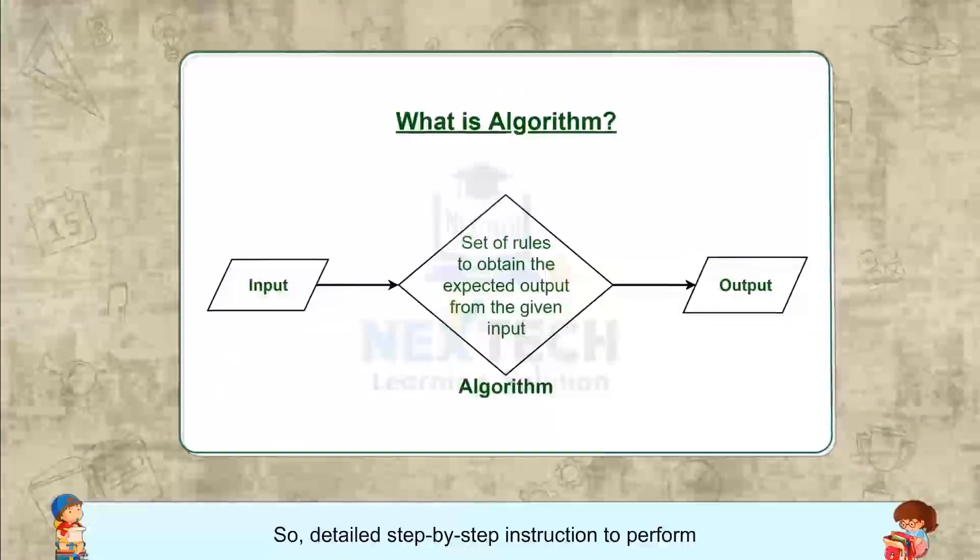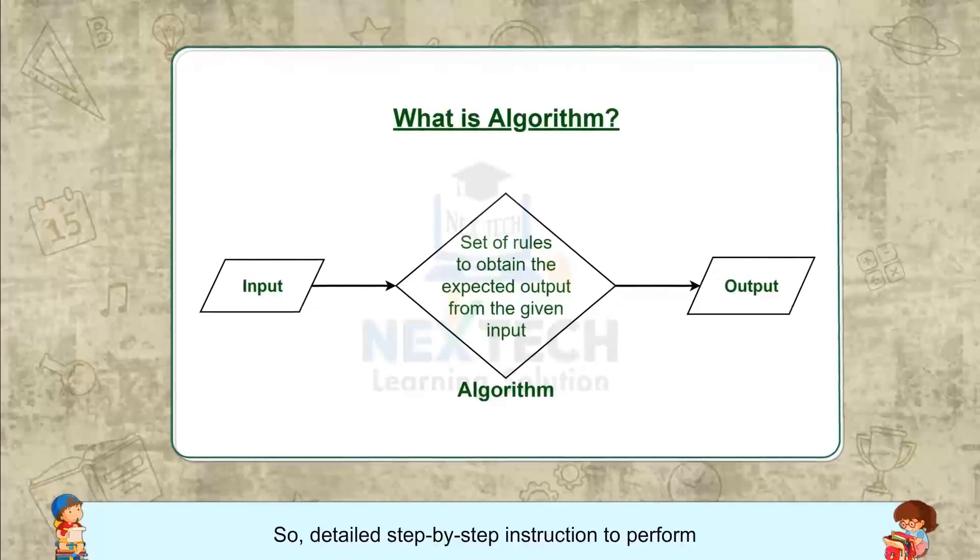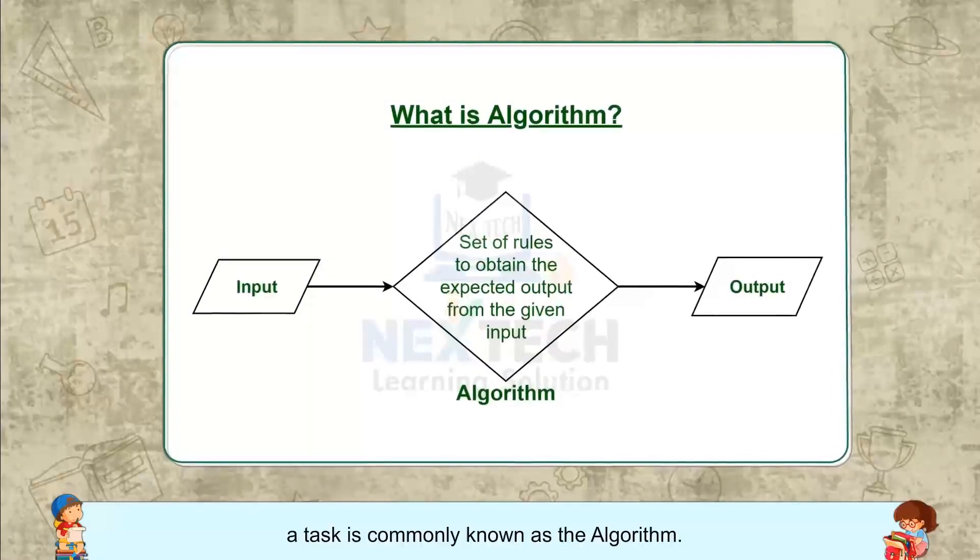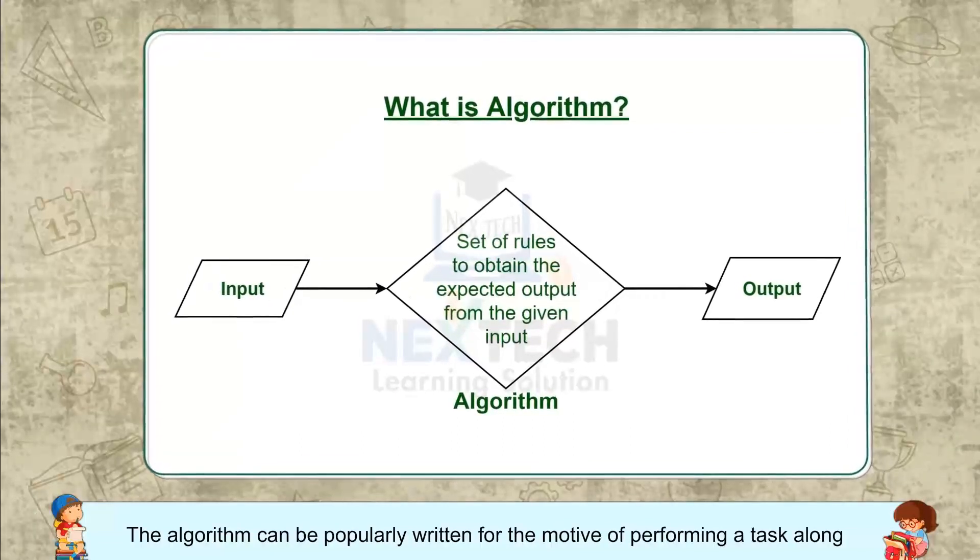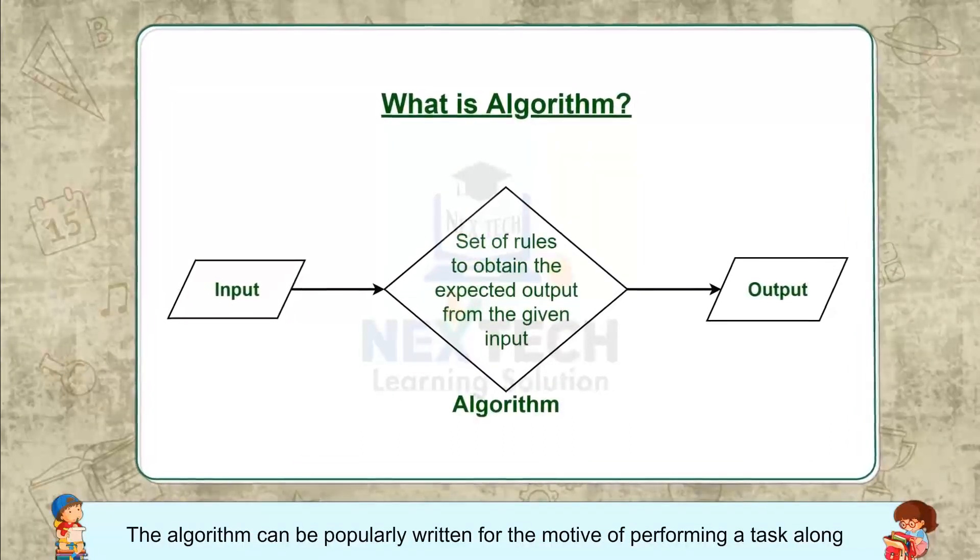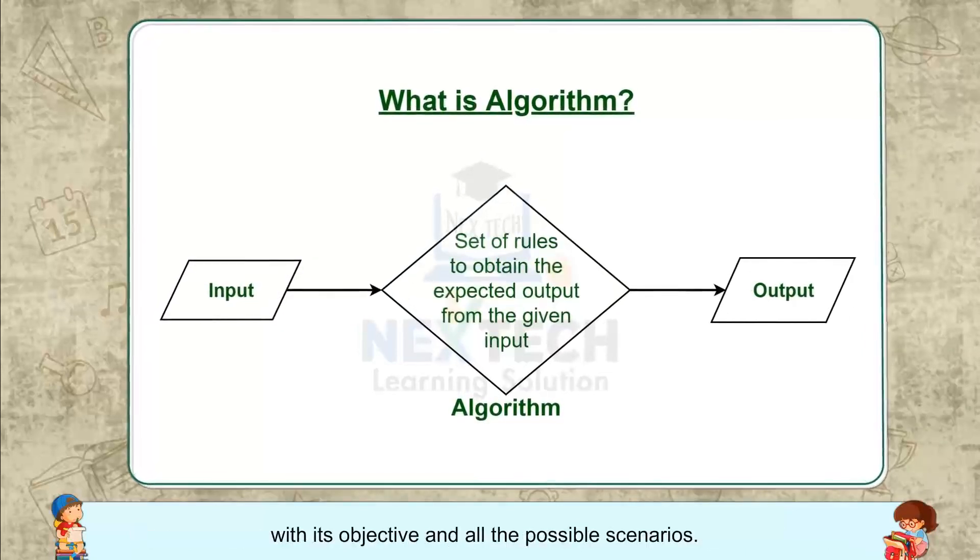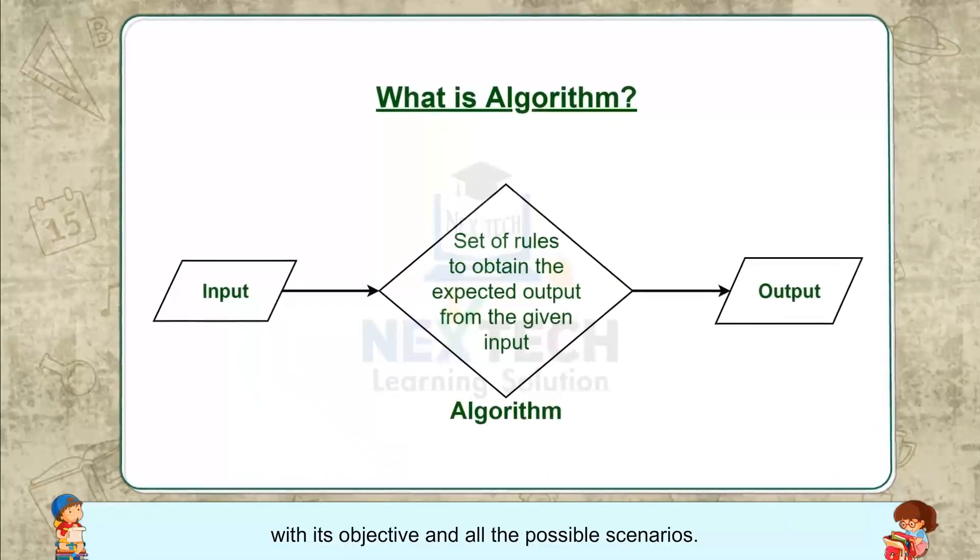So, detailed, step-by-step instruction to perform a task is commonly known as the algorithm. The algorithm can be popularly written for the motive of performing a task along with its objective and all the possible scenarios.